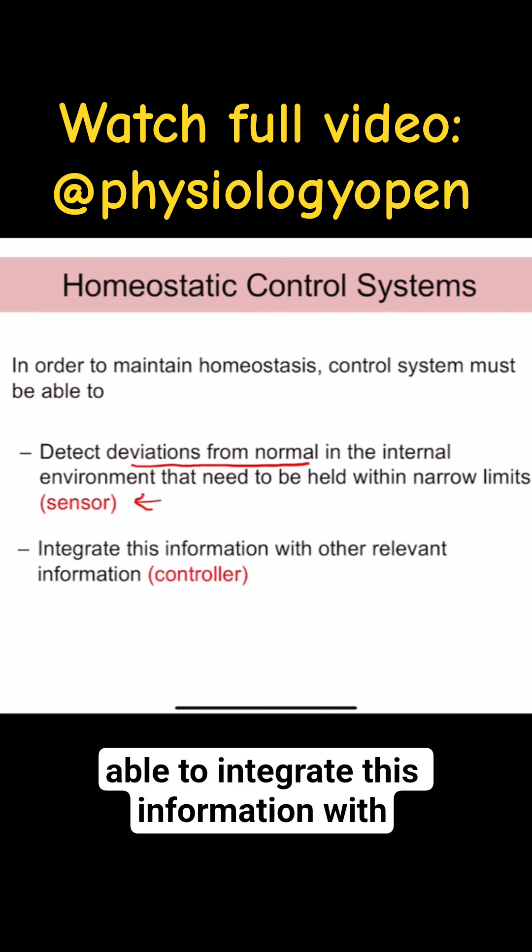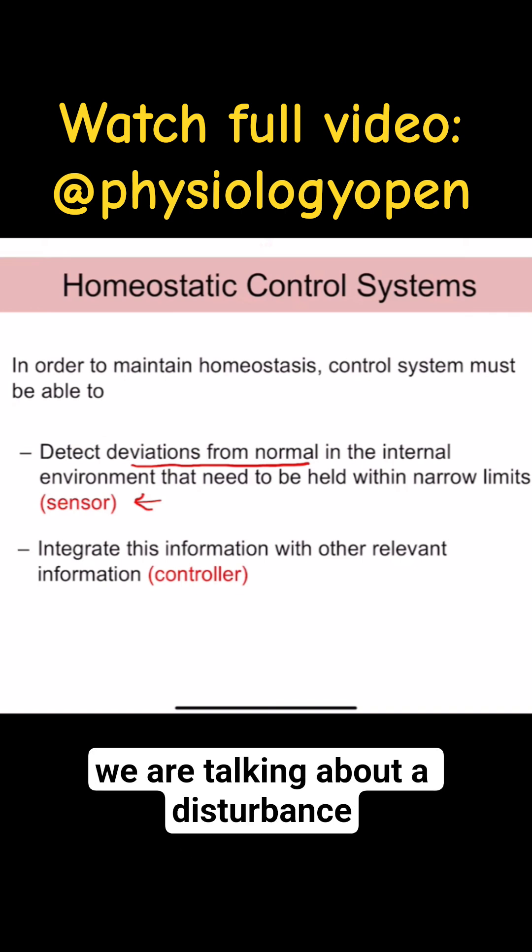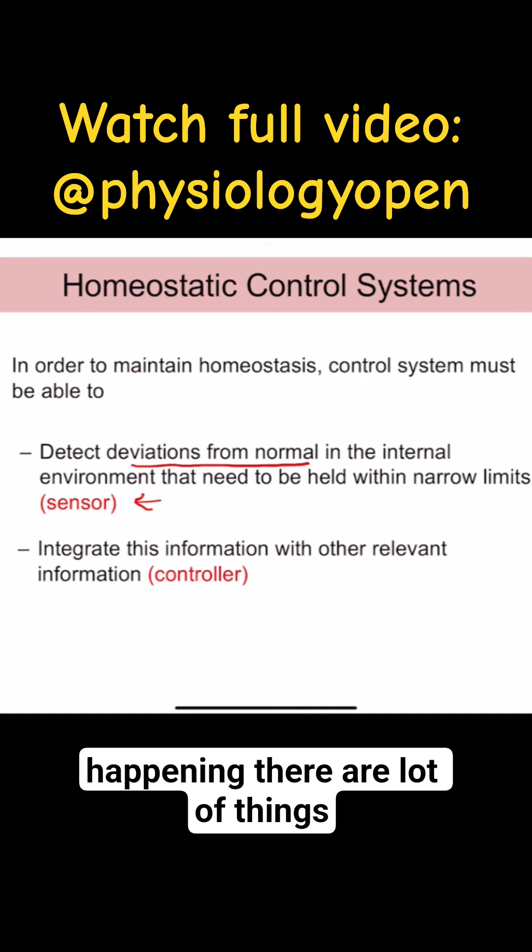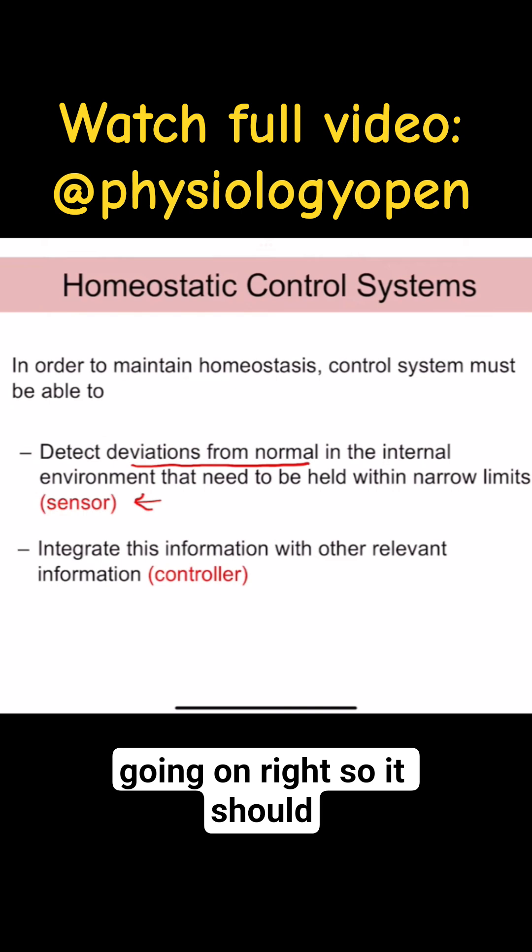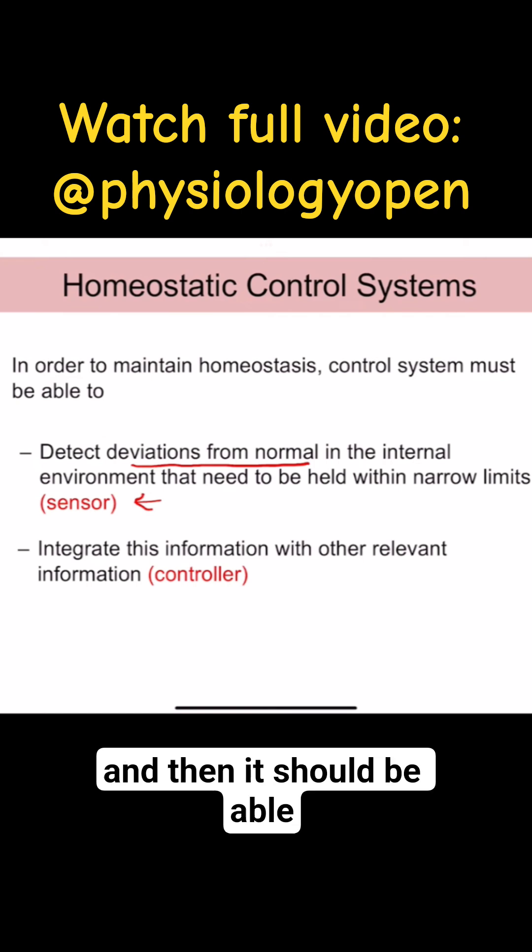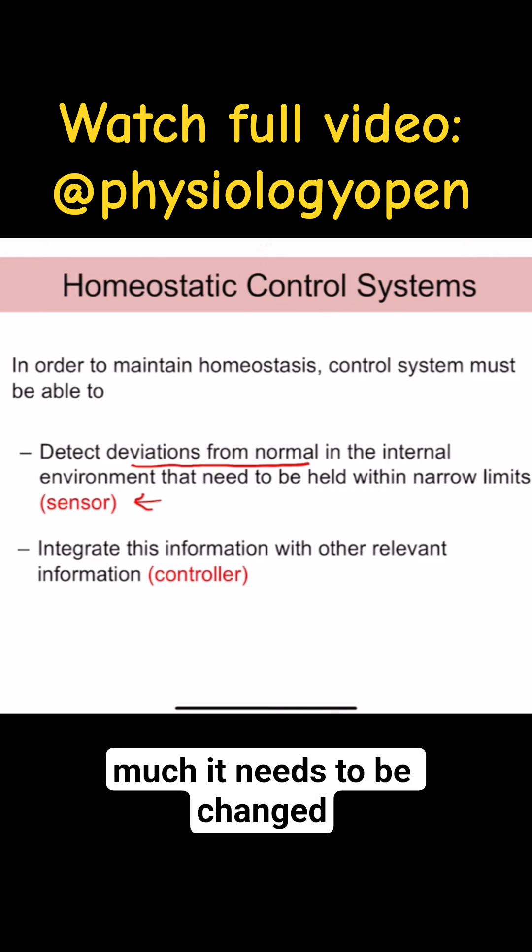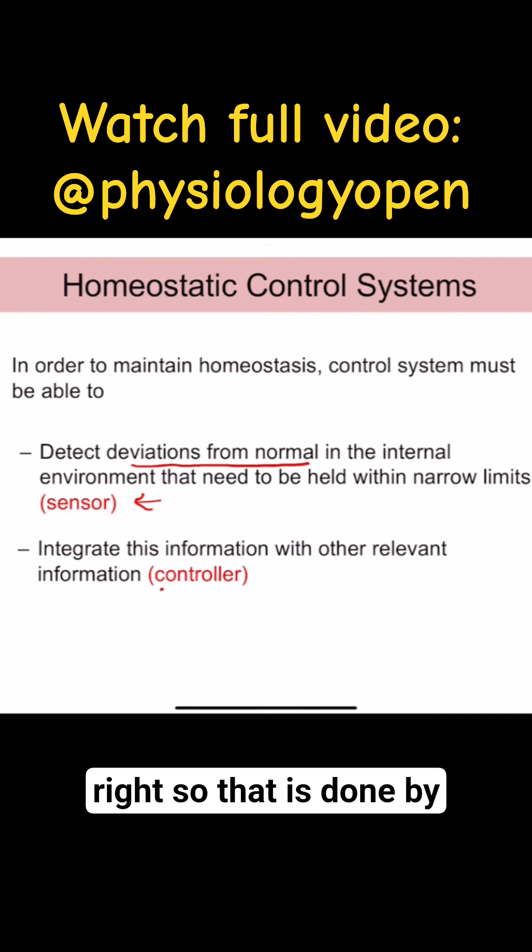Then they should be able to integrate this information with other relevant information. Whenever we're talking about a disturbance, one disturbance alone is not happening—there are lots of things going on. So it should receive information from various processes and then be able to integrate this information, like an algebraic sum. What is the end result? How much does it need to be changed? That is done by a controller.